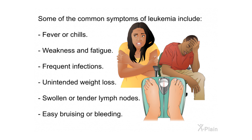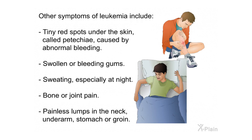Common symptoms of leukemia include fever or chills, weakness and fatigue, frequent infections, unintended weight loss, swollen or tender lymph nodes, and easy bruising or bleeding. Other symptoms include tiny red spots under the skin called petechiae caused by abnormal bleeding, swollen or bleeding gums, sweating especially at night, bone or joint pain, and painless lumps in the neck, underarm, stomach, or groin.